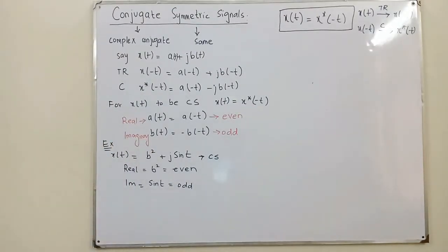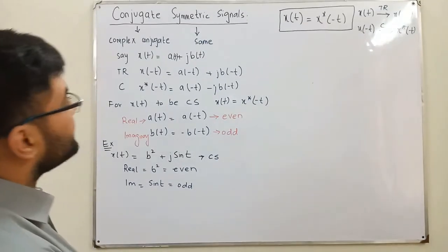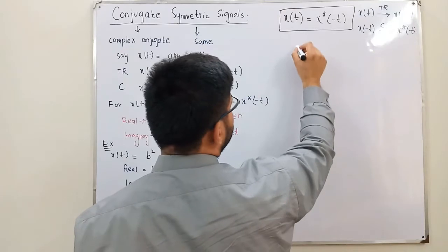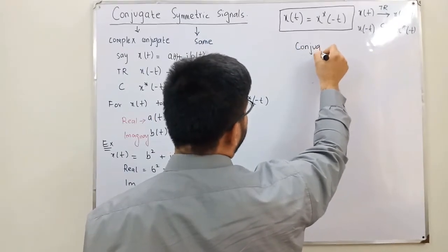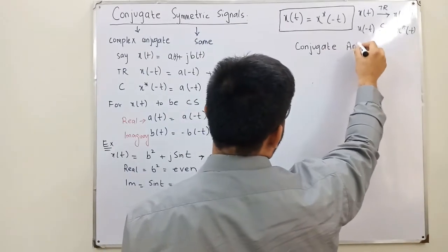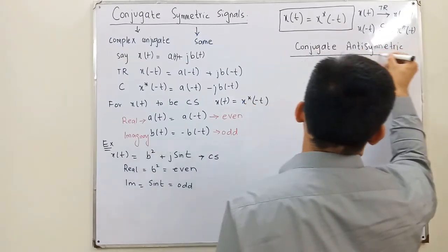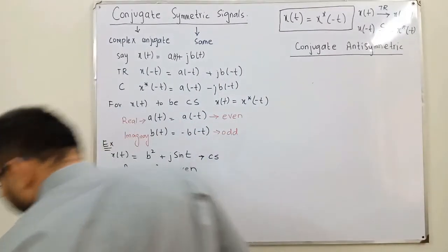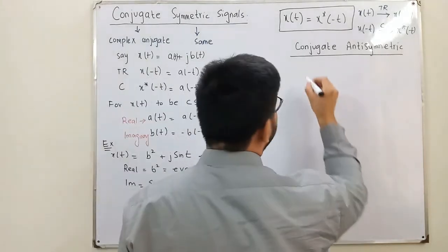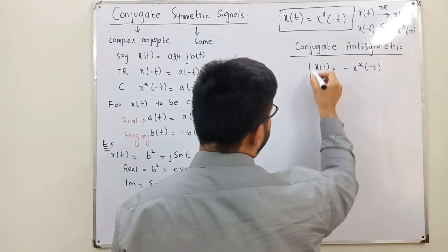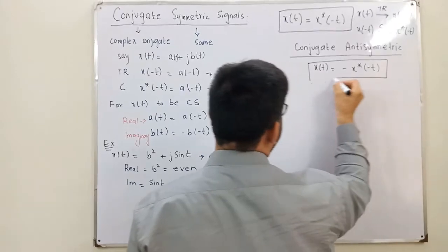Now the next topic is the conjugate anti-symmetric signal. The condition for a conjugate anti-symmetric signal is that x(t) = −x*(−t). That is, the signal equals the negative of the complex conjugate of its time-reversed version.